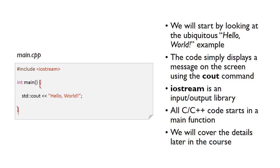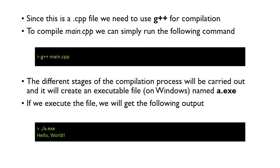Now I just want to look at the actual compilation procedure. We've got our main.cpp file and we need to compile it. Because it's a .cpp file we're going to use G++. G++ is the name of the compiler for C++ files, and if it was just a .c file we would use GCC — two different compilers for C and C++ source code. To compile main.cpp, we run the following command on the command line: launch your terminal application and type G++ main.cpp.